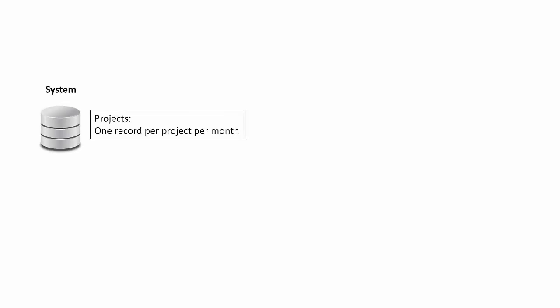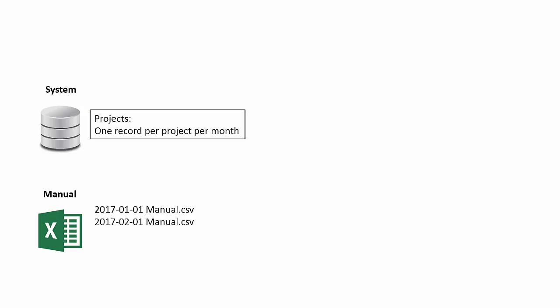A few years ago, a client came to me with some data and an issue — they had some of their data in SQL Server. They were tracking projects and had a table with one record per project per month. Each month you'd get a snapshot of the project: things like the status and how many tasks were left to be done. Most projects were tracked in the system, but some were tracked manually via CSV files — a monthly snapshot where the entire month was contained in one file. The file name convention told you the month, and you'd expect to get future files in future months.